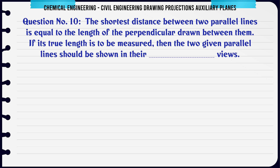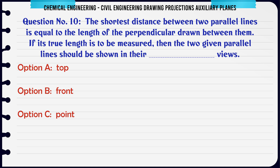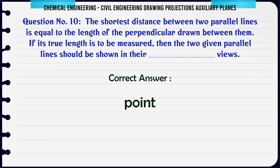The shortest distance between two parallel lines is equal to the length of the perpendicular drawn between them. If its true length is to be measured, then the two given parallel lines should be shown in their views. A) Top, B) Front, C) Point, D) Line. The correct answer is Point.